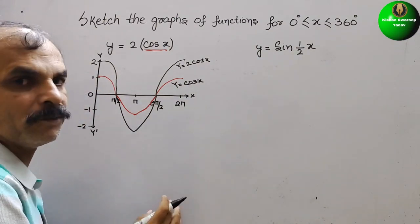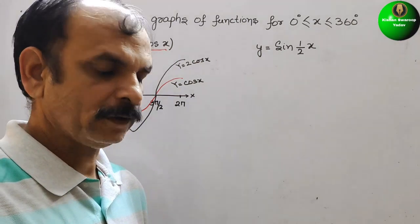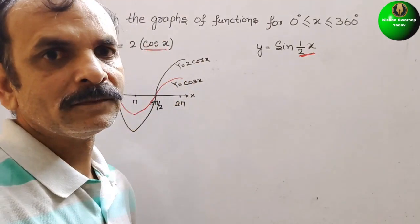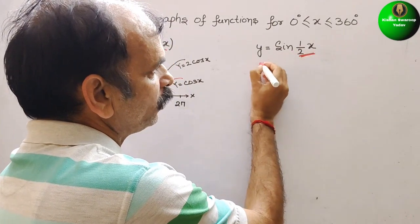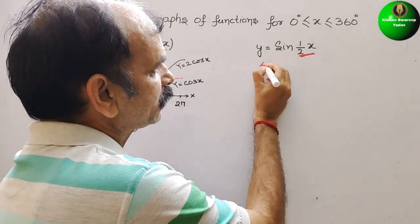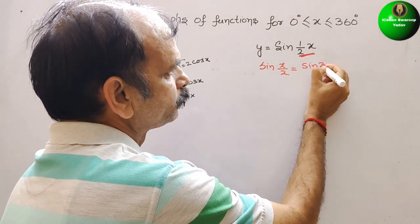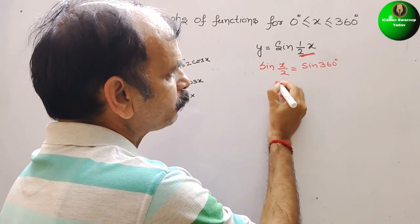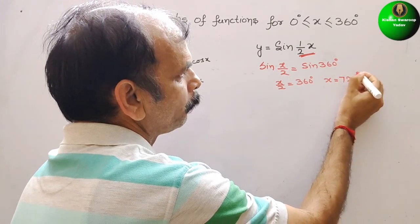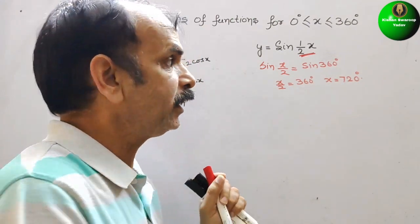Now the second one: they have given y is equal to sin(x/2). That means they have changed the period. We know that sin completes one full cycle in 360 degrees. So sin(x/2) = sin(360 degrees) means x/2 = 360 degrees, and therefore x = 720 degrees. That means one complete cycle should now cover 720 degrees.